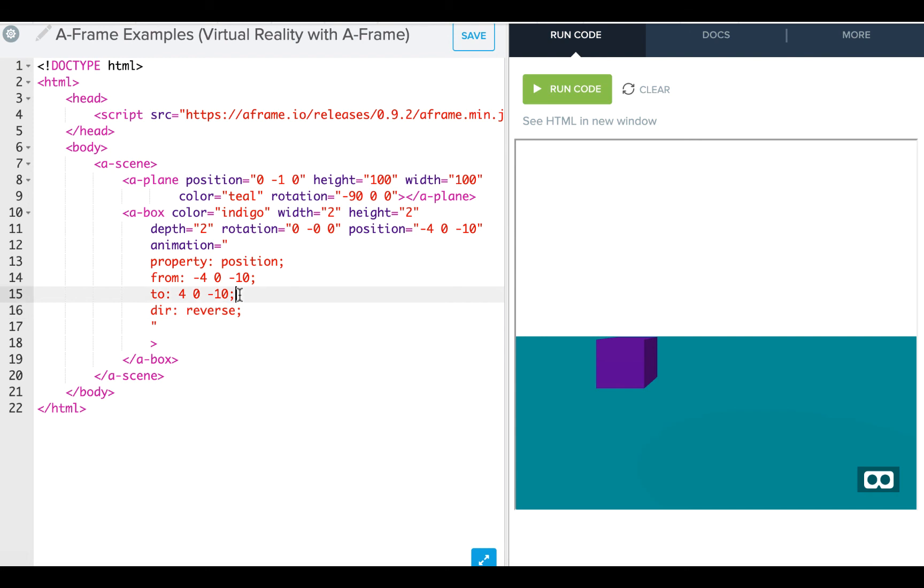And if I want to add a loop in here, so if I say loop equals true, and then I put direction equals alternate, then I see that my cube goes back and forth.